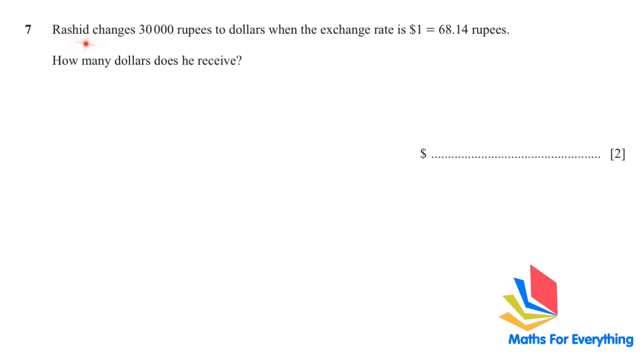Question number seven. Rashid changes 30,000 rupees to dollars when the exchange rate is 1 dollar equals 68.14 rupees. How many dollars does he receive? Whenever you have a question like this, write like that: dollar and rupees. Write the currency. 1 equals 68.14, and what has been given to you? 30,000 rupees. So put it in the rupees column. And what do you want to find? The number of dollars. Write x. Now cross multiply.